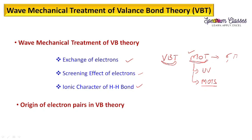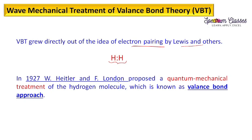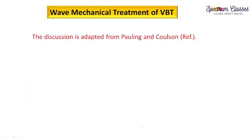This video is very important to understand this concept. This valence bond theory grew directly out of the idea of electron pairing by Lewis and others. In 1927, Heitler and London proposed a quantum mechanical treatment of the hydrogen molecule, known as the valence bond approach. This was further developed by Linus Pauling and J.C. Slater. The version we adapt here for discussion follows Pauling and Coulson; references will be given in the description box.